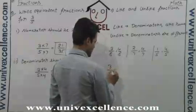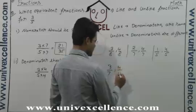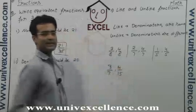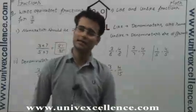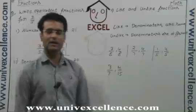Now, 3 by 7 and 4 by 15 are unlike fractions because denominators are different. So if the denominators are different, it is unlike fraction. If the denominators are same, it is like fraction.